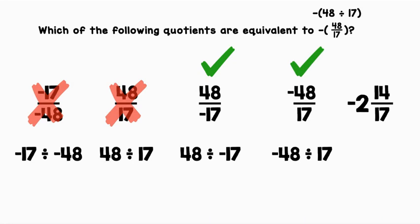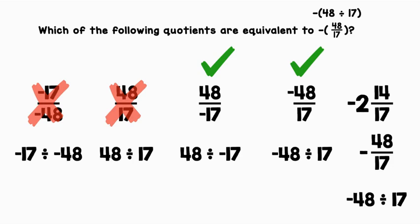Let's look at our last option: negative 2 and 14 seventeenths. First, let's convert this to an improper fraction. 17 times 2 plus 14 is 48. We bring the negative sign down and keep our denominator of 17, giving us negative 48 over 17. We can rewrite this as negative 48 divided by 17. Again, it's the same numbers in the same order, and a negative divided by a positive gives a negative — so this is equivalent as well.